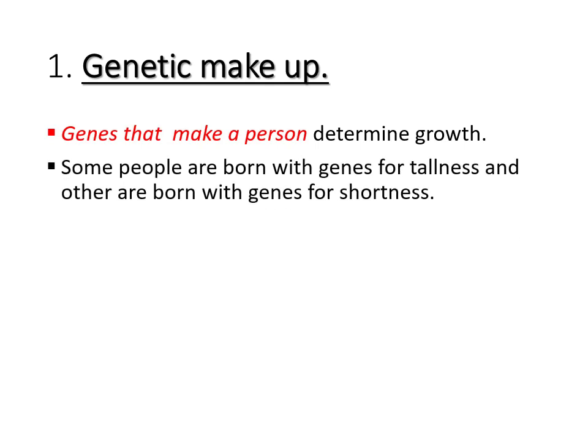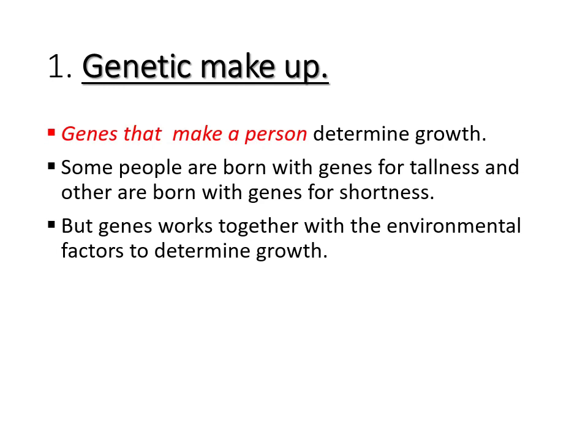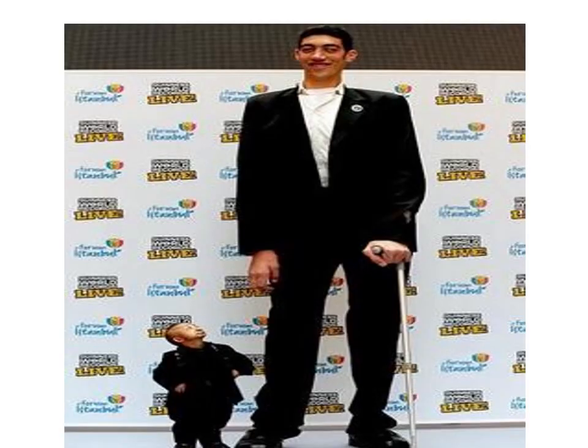Some people are born with genes for tallness and others are born with genes for shortness, so we expect people to grow differently because they are made up of different genes. However, genes work together with environmental factors to determine growth. Genes are influenced by environmental factors in determining the overall growth of an organism. As shown in the image, we have two persons — a tall one and a short one — which is due to their different genetic makeup.